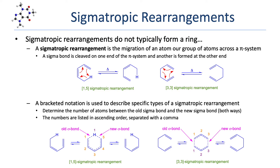Here we see two examples of sigmatropic rearrangement. In the first, a hydrogen atom migrates from one carbon to another carbon on the end of the pi system. One carbon-hydrogen sigma bond is cleaved and another is formed in the product. Note that the mechanism includes both pi electrons and one pair of sigma electrons.